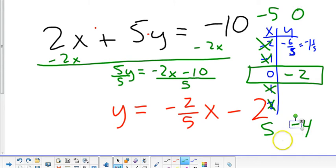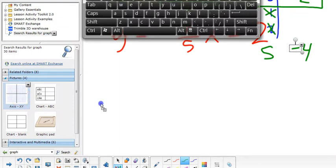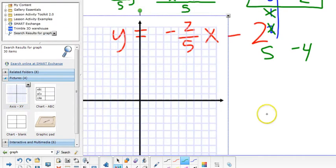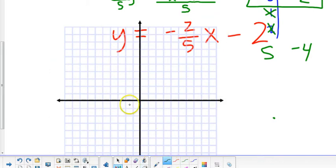And so, I can see, if I take a look, let me plot those points. If I plot those points, we got negative 5, 0. 0, negative 2, and 5, negative 4. These will line up. Not too bad for a line.